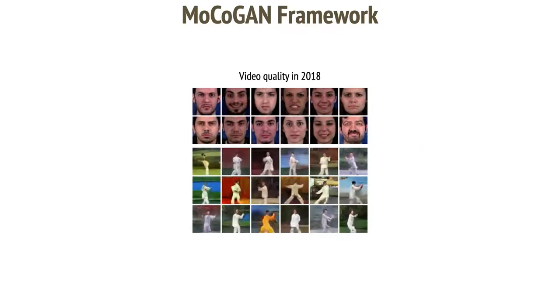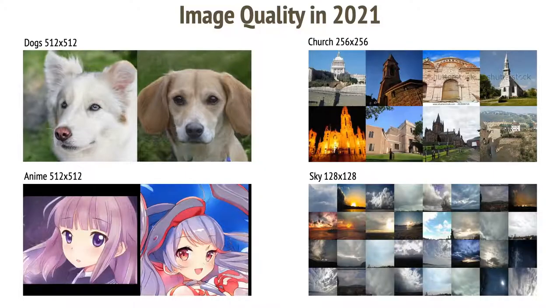Well, these videos were better than the state of the art in 2018, but they don't look very good today, especially if you compare it to how images look in 2021. This is the quality of images we can get in 2021. And maybe even better than that. The question is, can we generate videos with such quality?